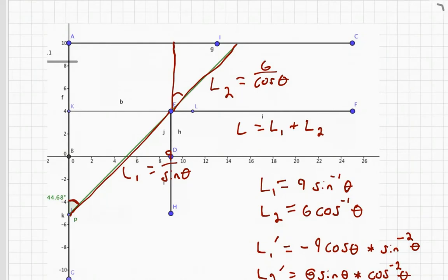That means L prime is just the sum of these two derivatives. Now, in our case, the final pole length is around 21.07.